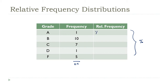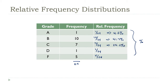So we get 1/24, 10/24, 7/24, 1/24, and 5/24. Then I'll get up my calculator, do the division for each fraction, and multiply by 100 to turn them into percentages. So 1/24 is 4.2%.